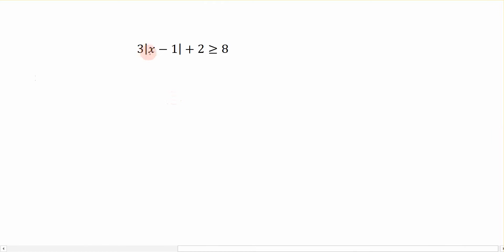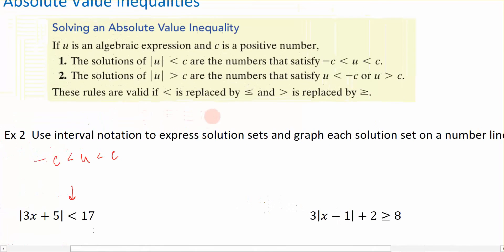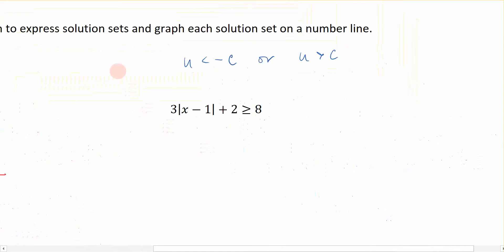However, what if we have the absolute value greater than a constant? If that's the case, we're going to be looking at this second scenario right here. And that scenario says that I have my absolute value portion less than the negative, or I have the absolute value portion greater than the positive. That's the pattern we're going to follow.